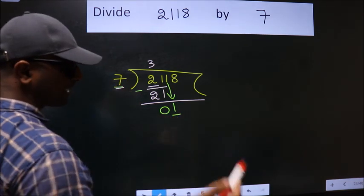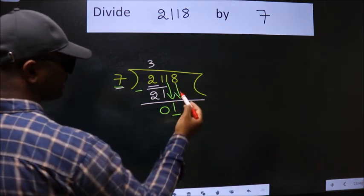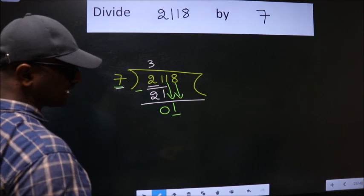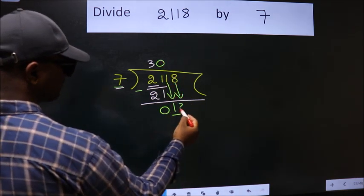So we should bring down the second number. And the rule to bring down the second number is put 0 here. Then only we can bring down this number.